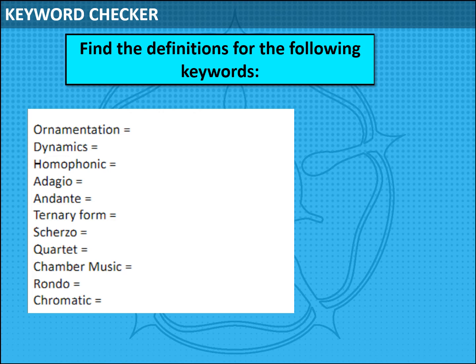Let's just quickly go through this then. Ornamentation is anything that is added to the melody to create decoration, often used in Baroque music — ideas such as mordants, turns and trills are all examples of ornamentation. Dynamics is how loud or how quiet a piece of music is — think of your Italian terms: mezzo forte, mezzo piano, piano, fortissimo, crescendo, diminuendo, or decrescendo. Lots of words in there.